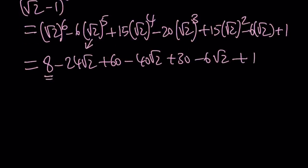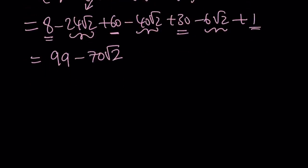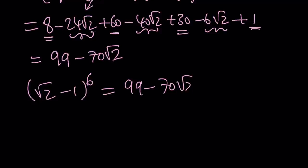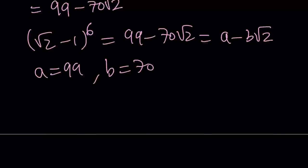Let's go ahead and add like terms. 8 plus 60 plus 30 plus 1 gives us 99. And then we have negative 24, negative 40, and negative 6 multiplied by square root of 2, giving negative 70 root 2. So we got square root of 2 minus 1 to the 6th power equals 99 minus 70 root 2. Our expression said a minus b root 2, where a and b are integers. Therefore, we can safely say that a must be 99 and b must be 70.